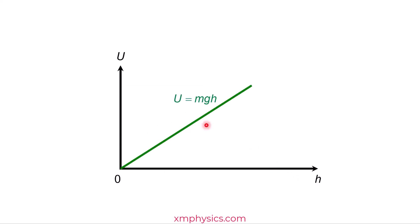Do you recognize this graph? This is the plain old vanilla GPE. So why does your GPE increase with height? It's because the gravitational pull is in the opposite direction — the gravitational pull is pulling you towards H equals zero. That's why if you go in the opposite direction to the gravitational pull, you gain GPE. And why is the gradient of this graph constant? It's because the gravitational pull is constant.